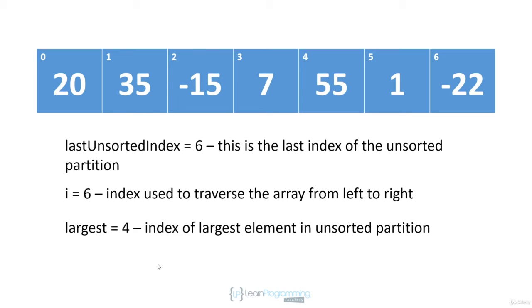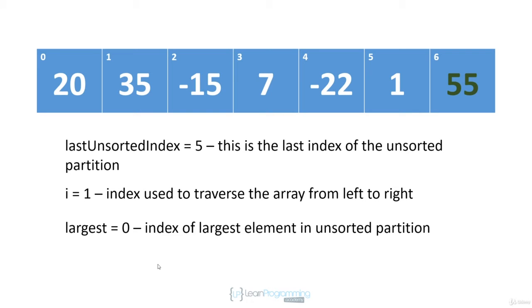At this point i is equal to the last unsorted index, so we have completed our first traversal of the array. We swap the largest element found in the unsorted partition — at position four — with the last element in the unsorted partition at position six. So we swap 55 and -22. We have now completed our first traversal, and 55 is in its correct sorted position. We decrement the last unsorted index to five, reinitialize i to one, and say the largest element in the unsorted partition is at position zero, then repeat the process.